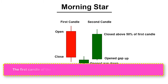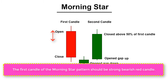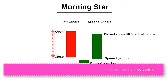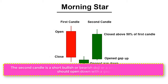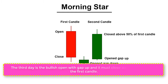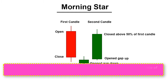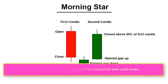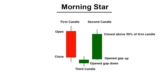Number one: the first candle of the Morning Star pattern should be a strong bearish red candle. Number two: the second candle is a short bullish or bearish doji, or a small body candlestick that should open down with a gap. Number three: the third candle is bullish, opens with a gap up, and must close above the middle of the first candle. Number four: this pattern must be formed at a support or oversold area. These four points are very important for determining a 100% perfect Morning Star candlestick pattern.